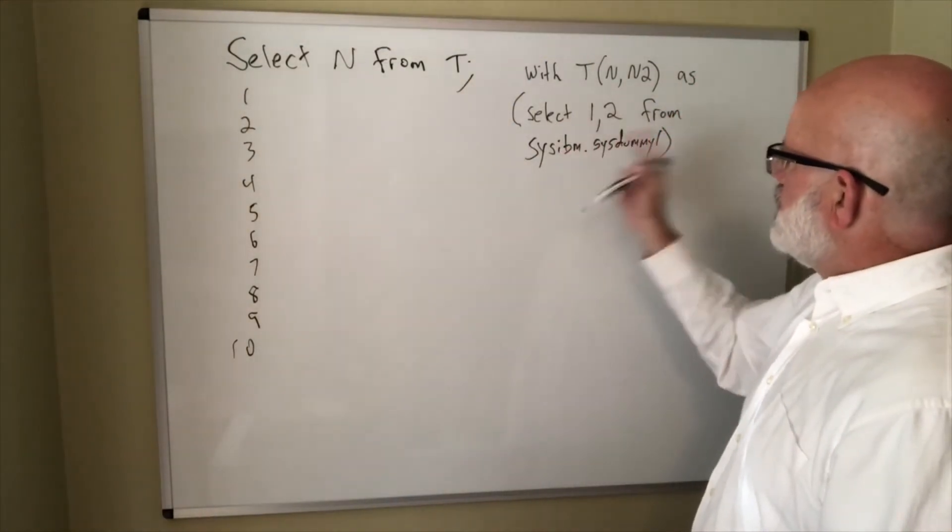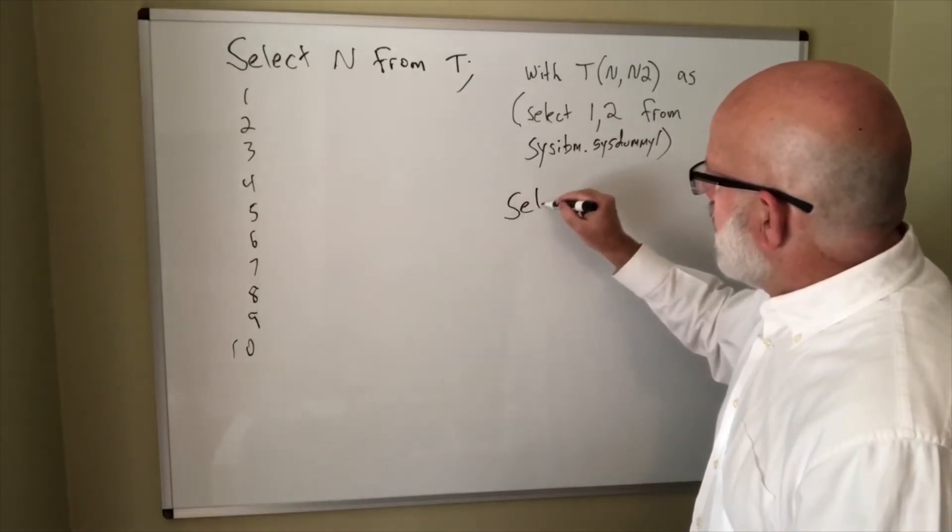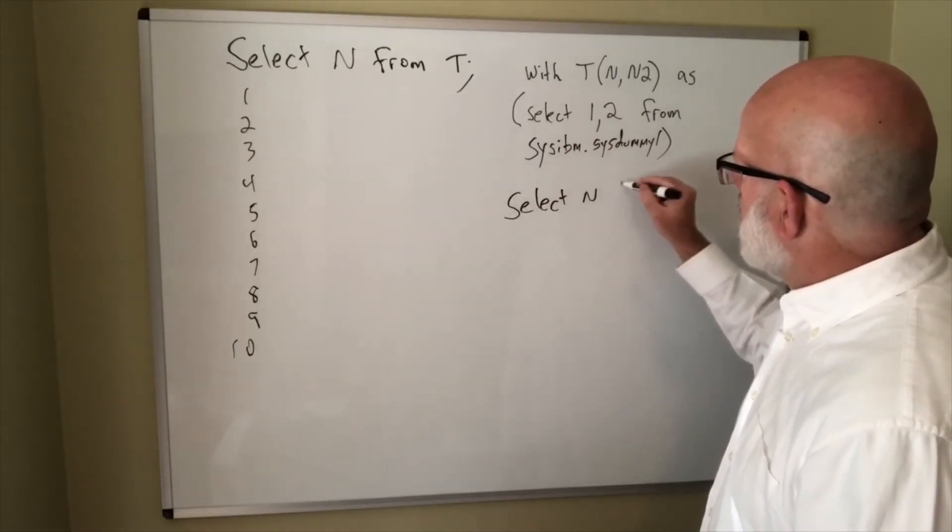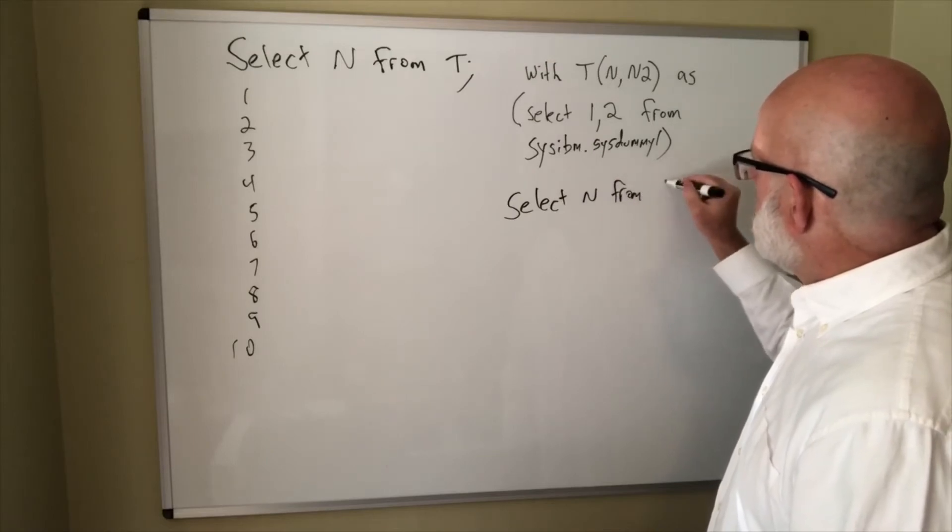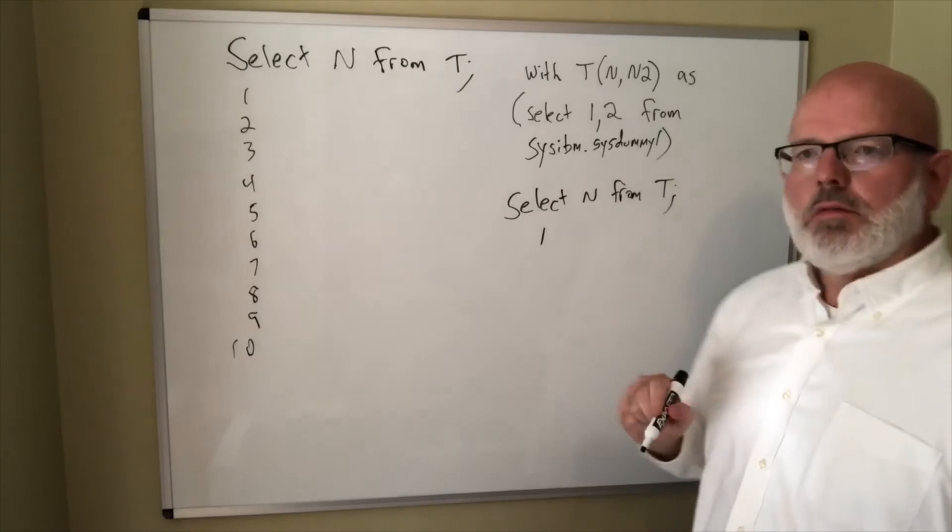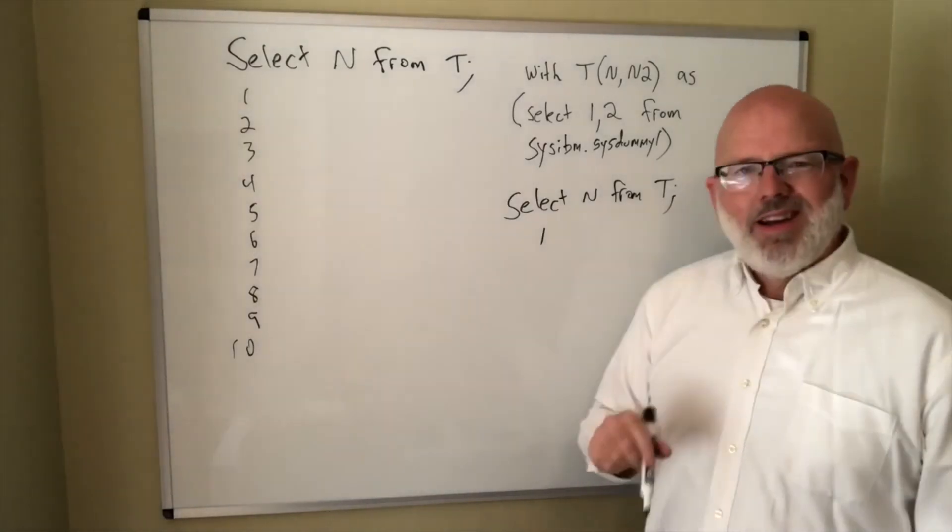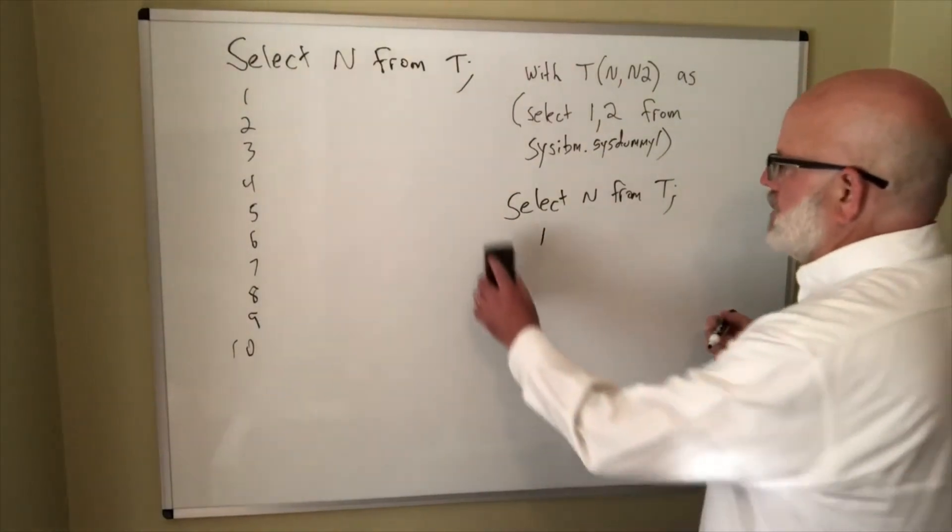So when I say select 1, 2 from sysibm.sysdummy1, when I query that, select n from t, my result now will be a 1. Just a 1. Single row and there's my value. Now I need to make it recursive to get all the other numbers.